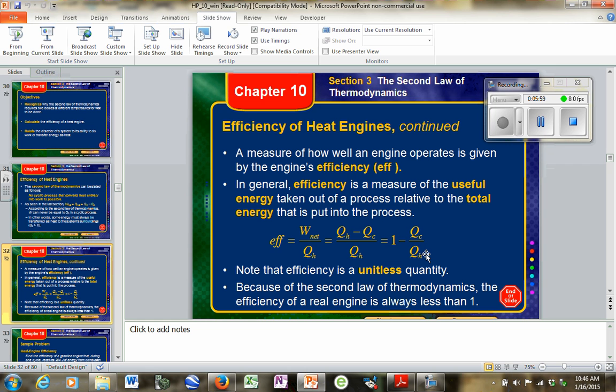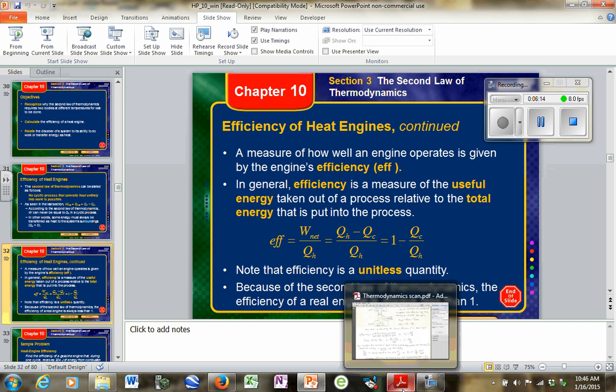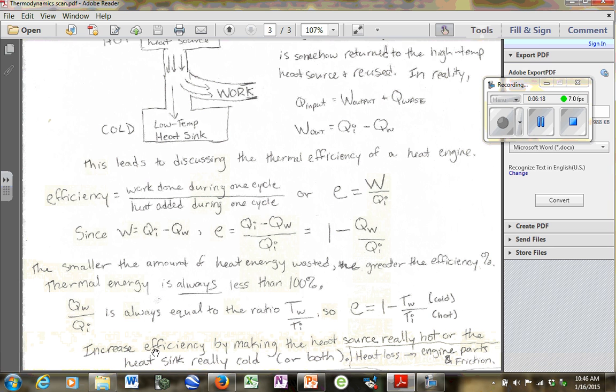And so, number one, efficiency is unitless. But secondly, it's always less than one or less than 100%. You're never, ever, ever going to get 100% efficiency. Now, how do you increase the efficiency of an engine? I'll give you one big key item that you can do. That would be down here. You're going to increase the efficiency. And this makes sense if you look at the equations here. By making that heat source really hot or the heat sink really cold.